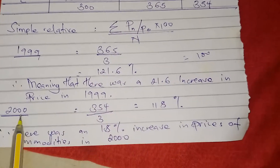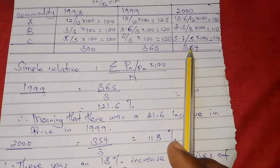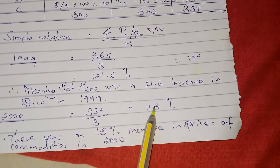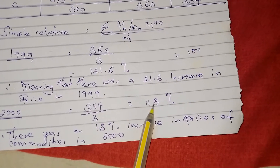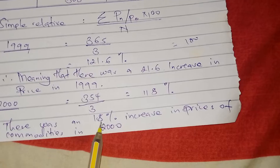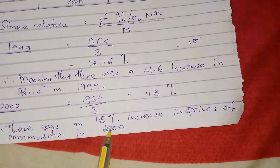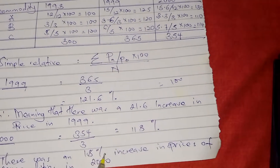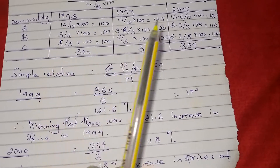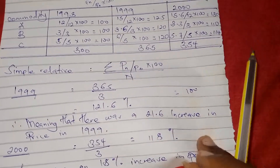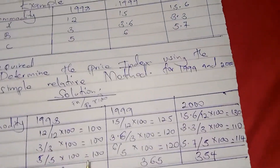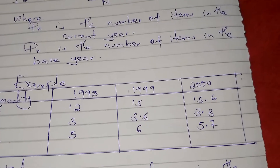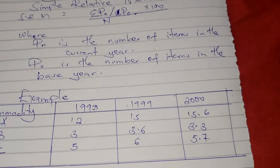For 2000, we take our summation of 354 divided by 3, giving 118%. This means there was an 18% increase in the prices of commodities in 2000 compared to 1998. That is the simple relative method for calculating the price index. Thanks for watching — don't forget to subscribe, like, comment, and share with your friends.